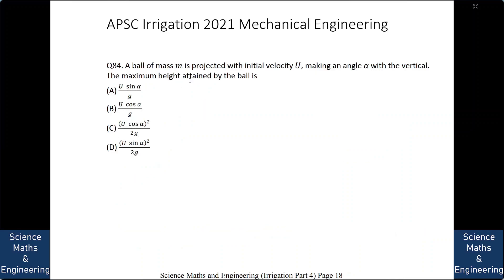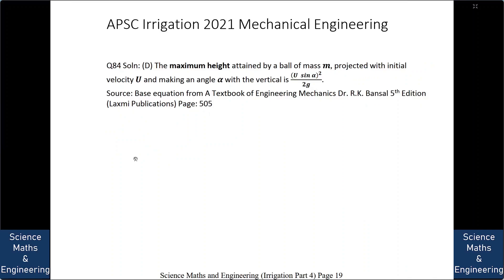A ball of mass M is projected with initial velocity U making an angle α with the vertical. The maximum height attained by the ball is: A. U sinα / g, B. U cosα / g, C. (U cosα)² / 2g, or D. (U sinα)² / 2g. The answer is D: (U sinα)² / 2g. This follows directly from standard projectile motion derivation.